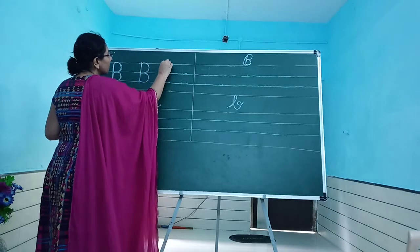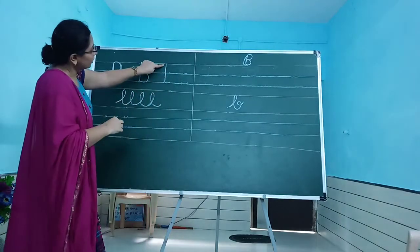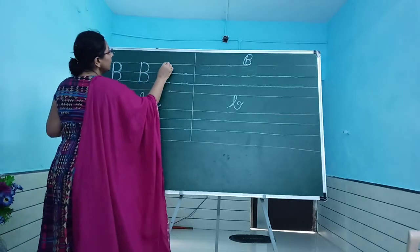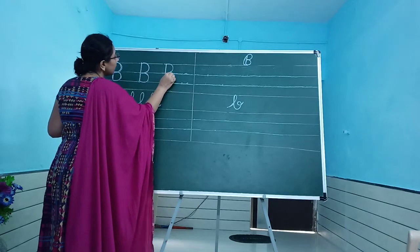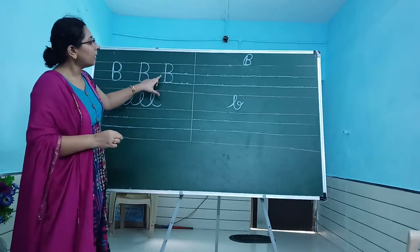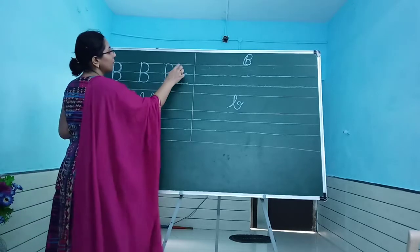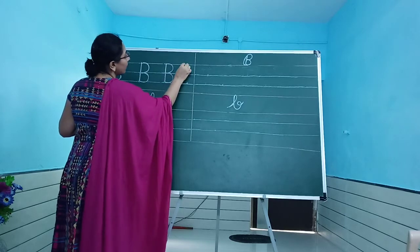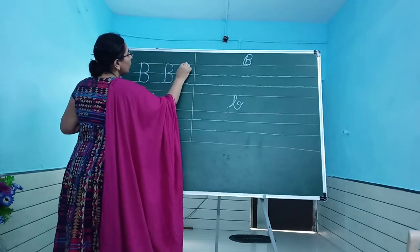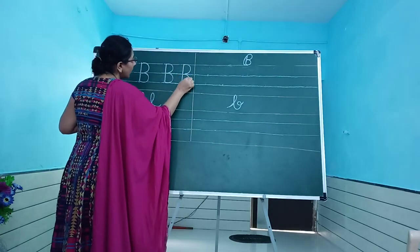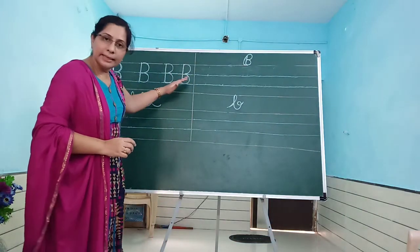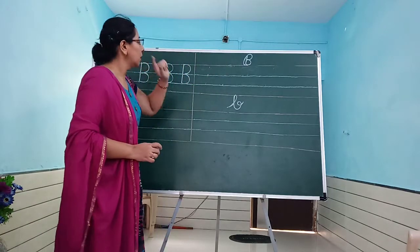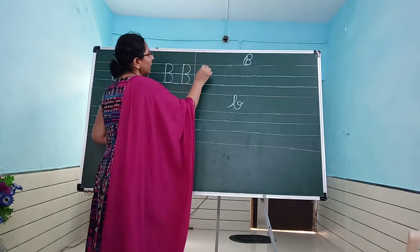If this base is clear, then it will be more easy for us to write capital Cursive B. We will touch the top line, we will touch the second blue line, we will draw the extending line, and we will make two half circles — this is the first circle and this is the second circle. Now it is our capital B.